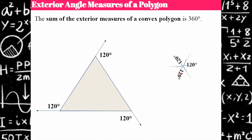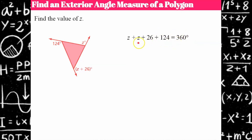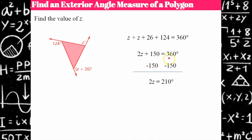If you have spare time, try drawing convex polygons — they don't have to be regular — cutting out the exterior angles and gluing them together. They will all meet at their vertices to form a perfect circle. Now let's use this: since exterior angles sum to 360, I can write an equation. z + (z + 26) + 124 = 360. Combine like terms: 2z + 150 = 360. Subtract 150: 2z = 210. Divide by 2: z = 105.